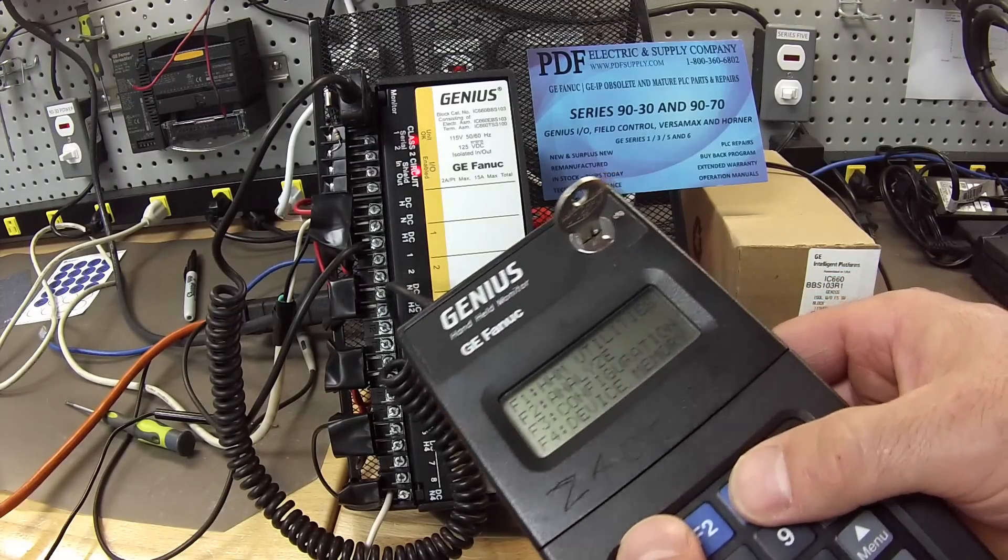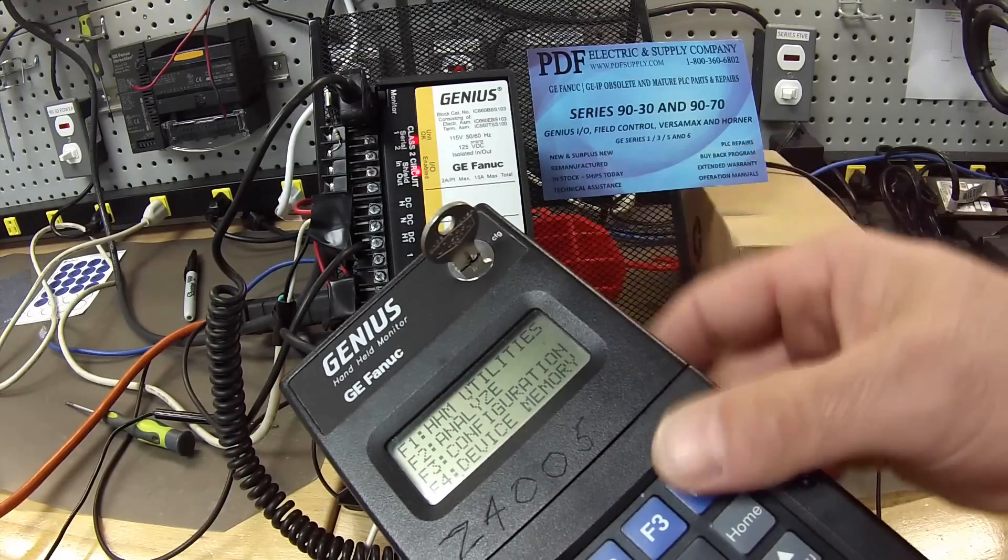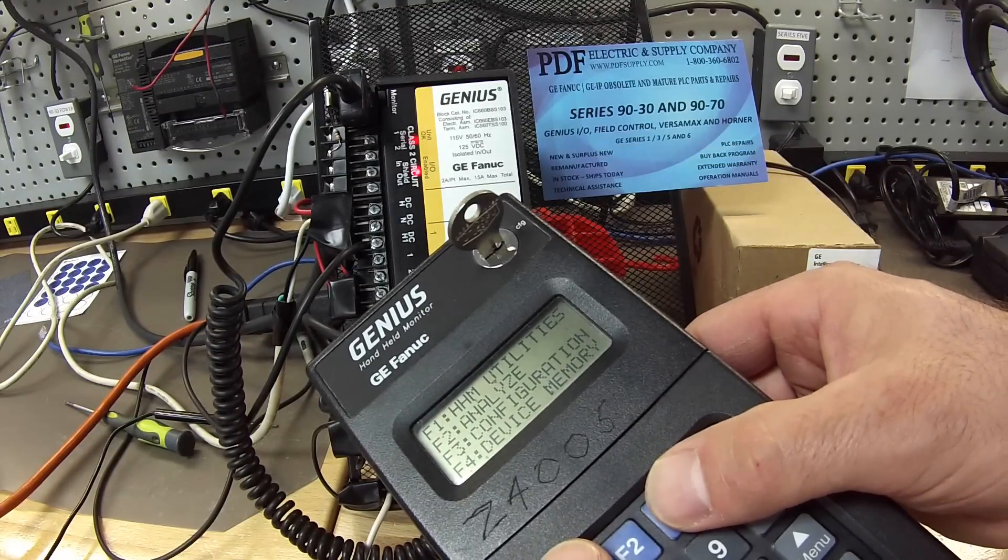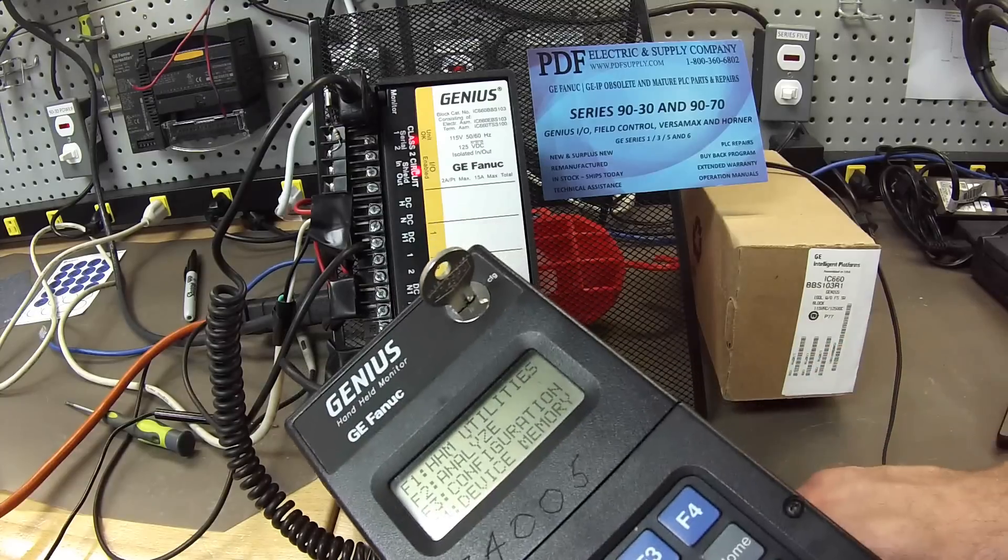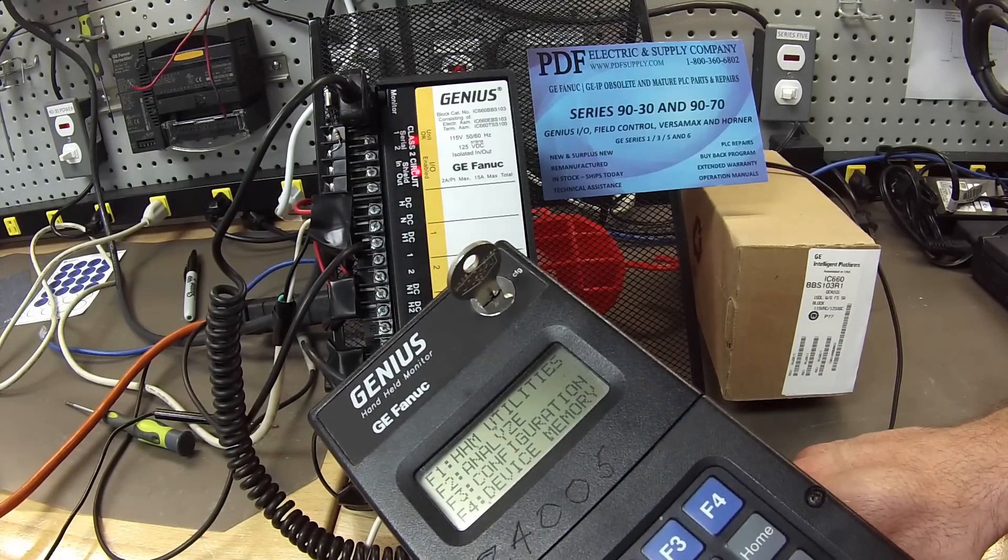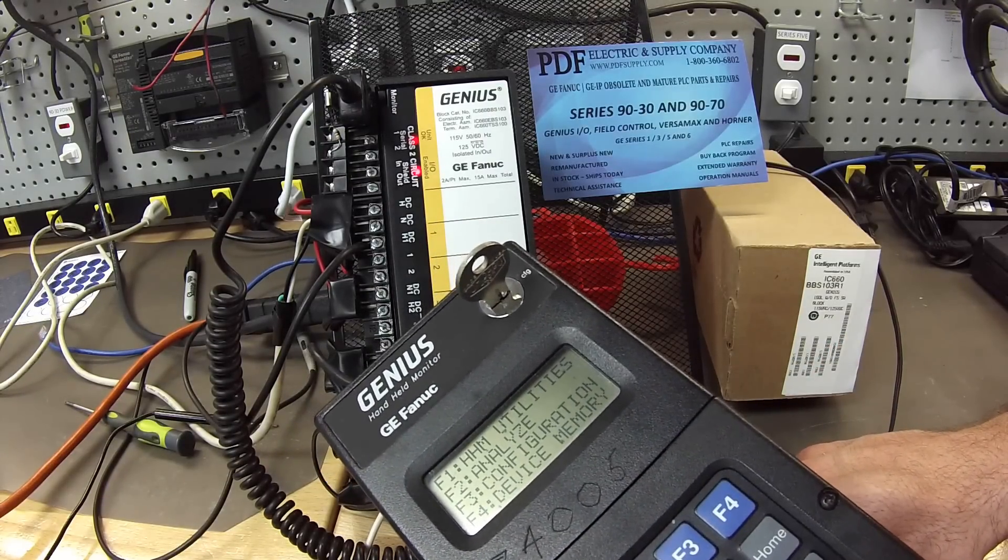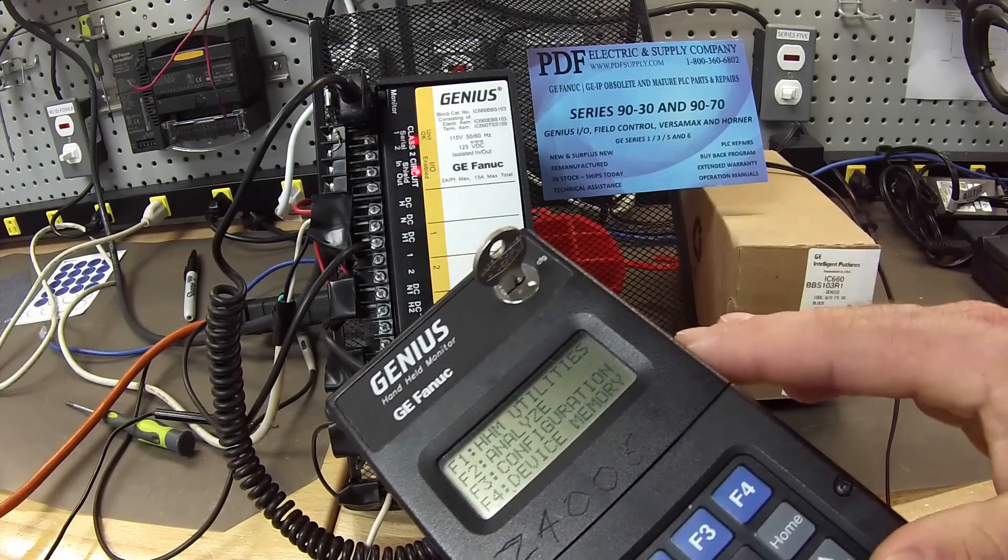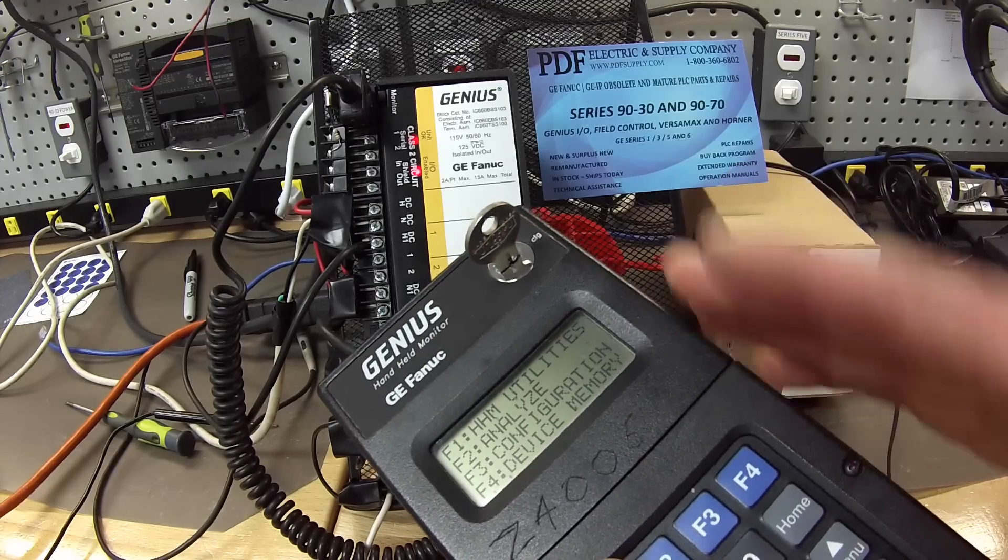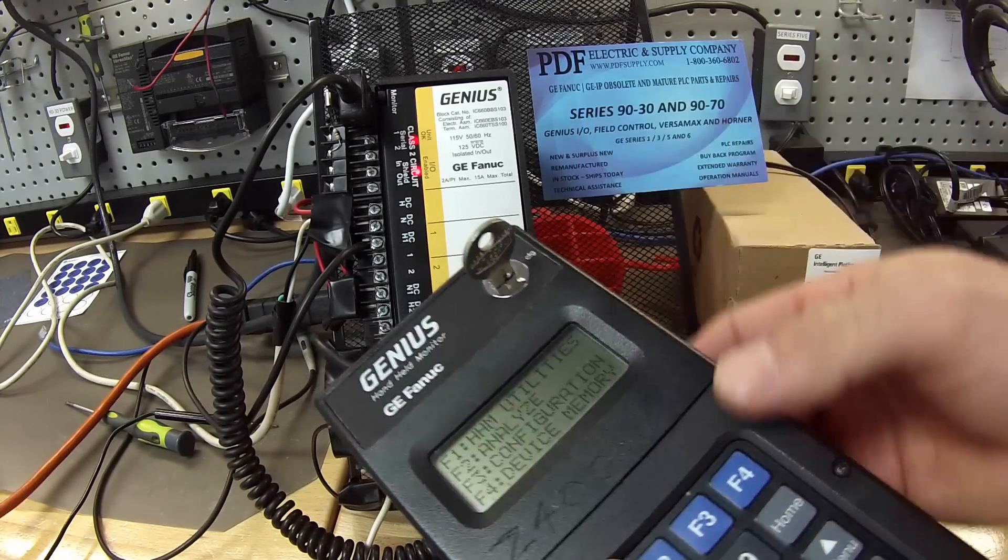For the purpose of the test, I keep the Genius Blocks at their factory settings and configurations. For your purpose in the field, you'd likely keep all of your configurations the same. So you don't need to change your configurations to what I have here. This is just as an example.